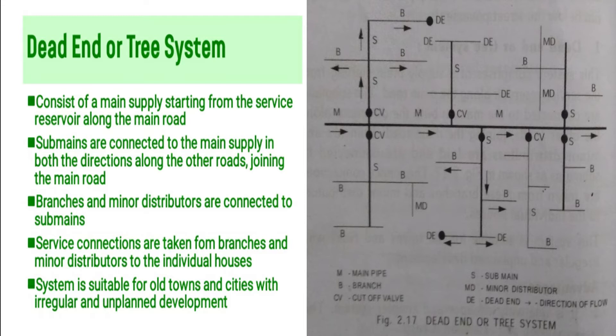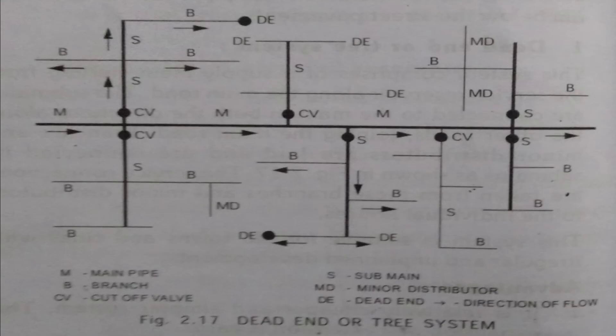From branches and minor distributors, service connections are given to individual houses. Here is the layout of the dead end or tree system. It resembles a tree, which is why it is called the tree system.